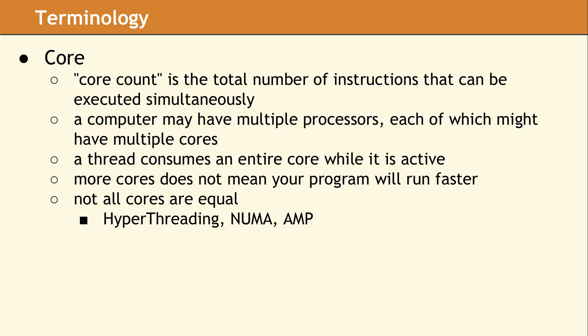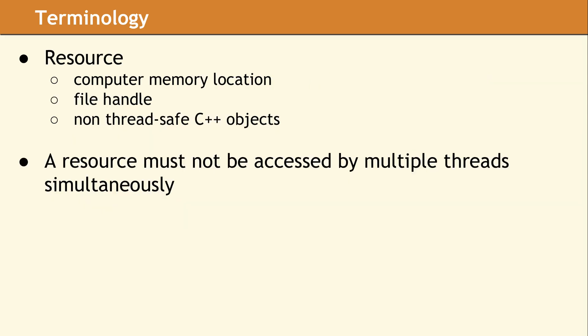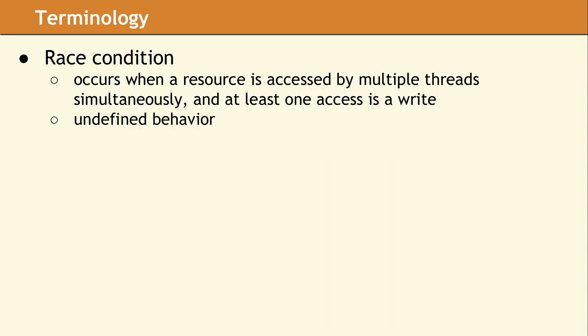The threads in your program will be running on some number of cores. The number of cores physically in your computer determines the total number of instruction streams that can be executing simultaneously. A computer might have multiple processors, each of which might have multiple cores, and while a thread is active and running, it has exclusive use of a single core. In the context of multithreading, a resource is considered to be anything which would be corrupted if two threads were to access it at the same time. If two threads access a resource simultaneously and at least one of those accesses is a write, you have a race condition. In C++, a race condition is explicitly undefined behavior, and it is extremely important to avoid race conditions for correct behavior of your programs.